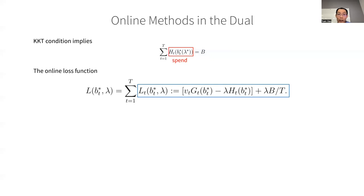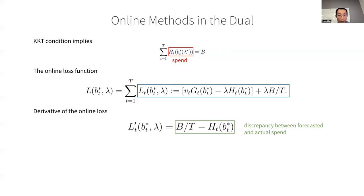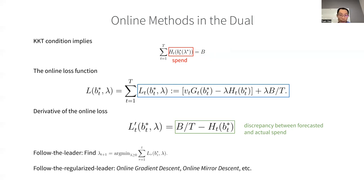So back to the Lagrangian, we can decompose it to the sum of online losses at each request. The derivative of the online loss is simply the difference between the average budget per request and the actual spend in the t's request.